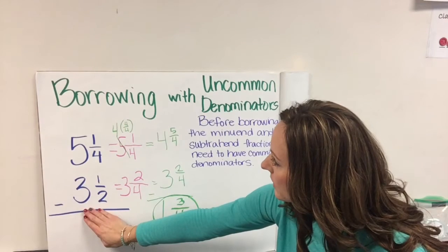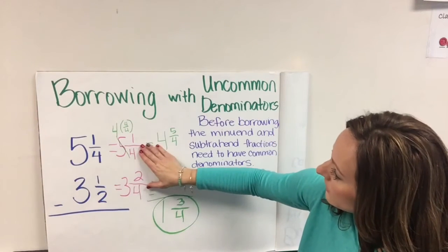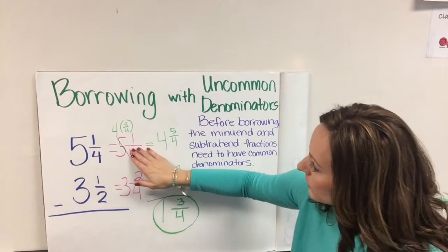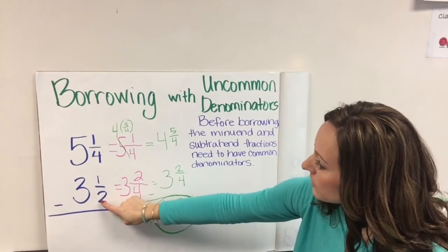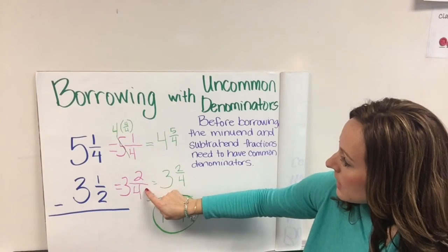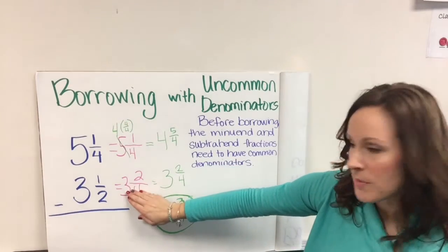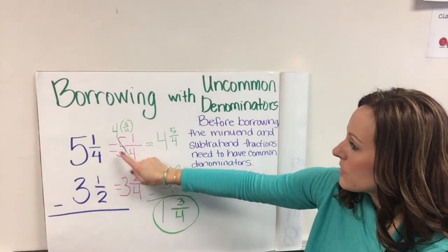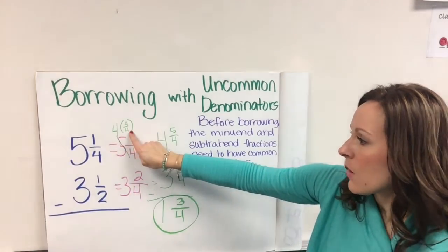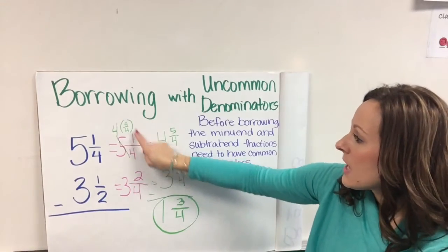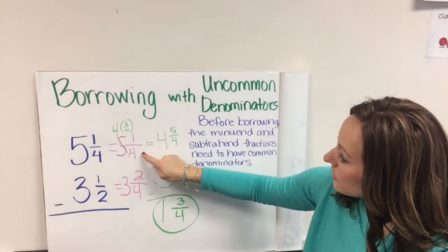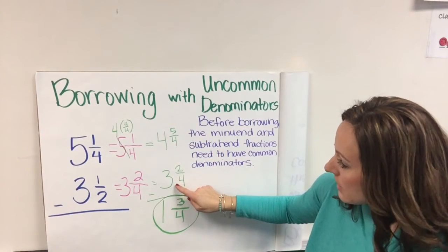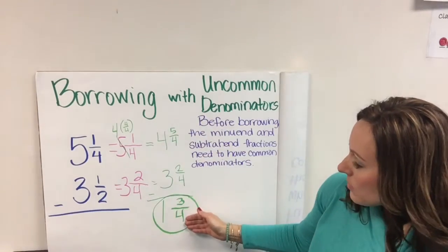So you can see that we started with a problem here. We found our common denominators and changed our fractions over here. We kept 5 and 1 fourths the same, and we changed 3 and 1 half to 3 and 2 fourths. So this was the step where we found common denominators, and then we did our borrowing. We subtracted from that whole number, took 1 away, and represented that whole number as a fraction, then added it to the fraction that was already here. So we got 4 and 5 fourths, and carried 3 and 2 fourths over, and then we were able to subtract.